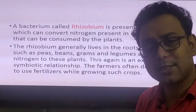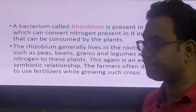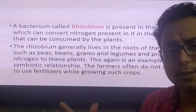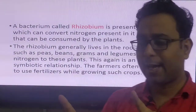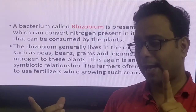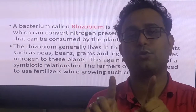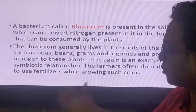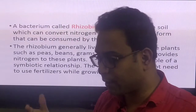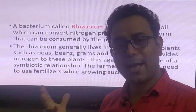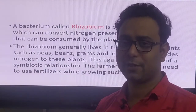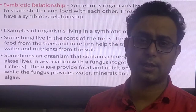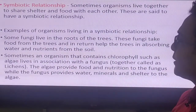Leguminous plants do not need any external source of nitrogen because this bacteria provides it. This is an example of a symbiotic relationship. It is called symbiotic because both the plants and the bacteria are benefited together by this association. By the use of this symbiotic association, plants do not require chemical fertilizers — a very interesting fact.